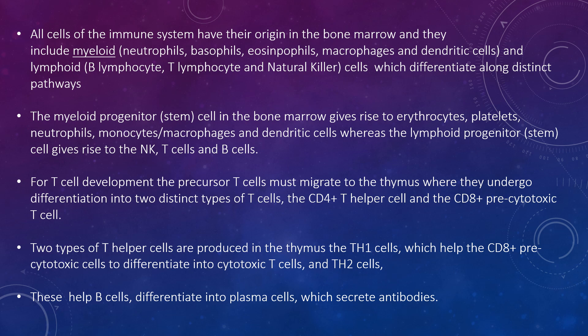The myeloid progenitor stem cells in the bone marrow give rise to erythrocytes, platelets, neutrophils, monocytes, macrophages, and dendritic cells, whereas the lymphoid progenitor stem cells give rise to natural killer cells, T cells, and B cells. For T cell development, the precursor T cells must migrate to the thymus where they undergo differentiation into two distinct types: CD4 helper cells and CD8 precytotoxic T cells.